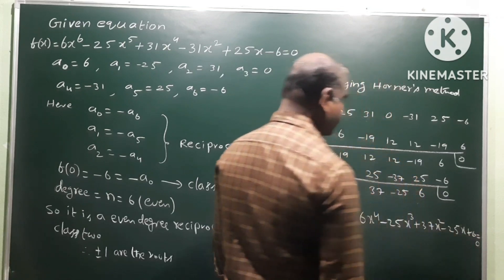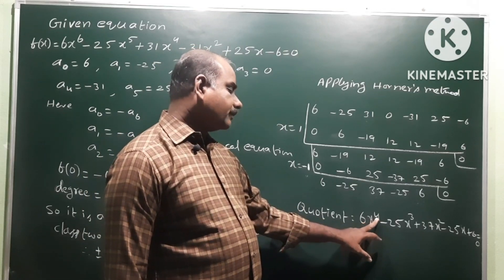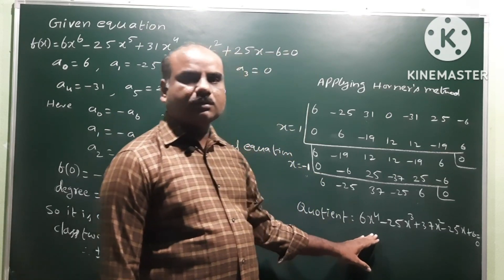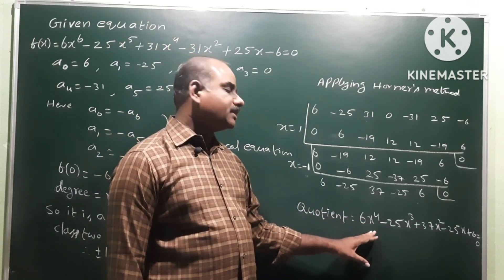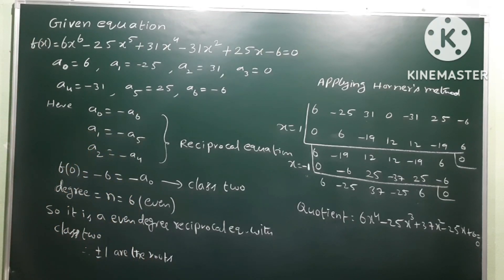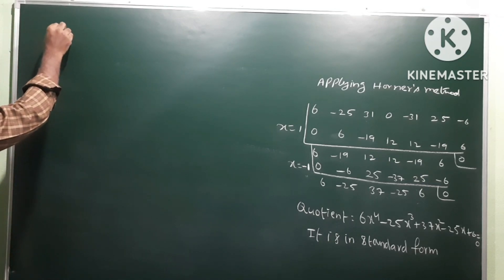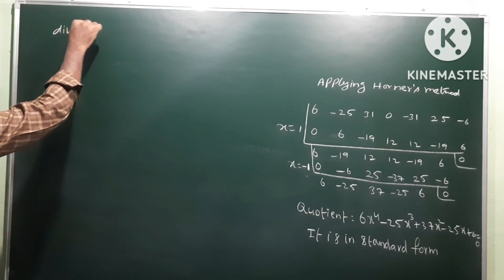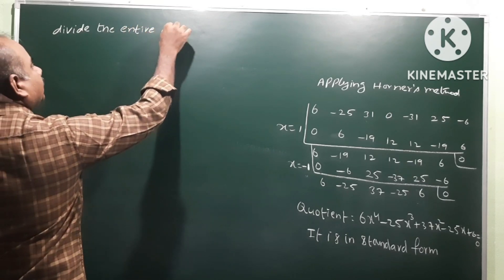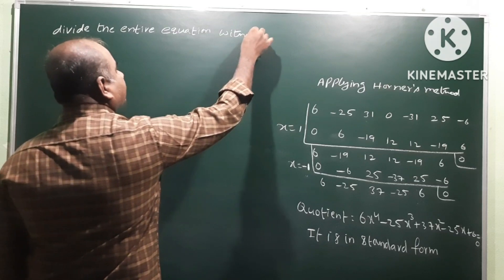This is our quotient, equal to zero. If you observe this, it is even degree — degree 4. Here the leading coefficient is +6 and constant is also +6, so this is class 1. Degree 4 and class 1 is the standard form. In standard form, we divide to find the remaining roots. Divide the entire equation by x².